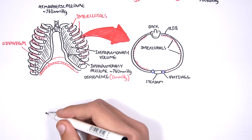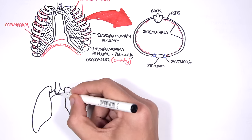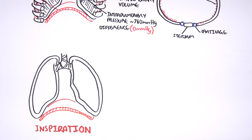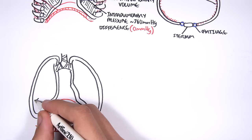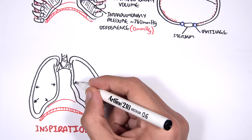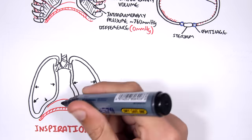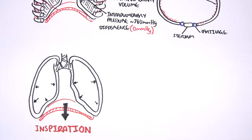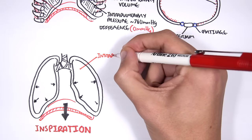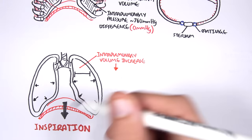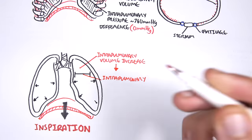Let's look at the mechanism of inspiration. Here we have the lungs, the pleura, and the diaphragm below. During inspiration, the volume within the lungs increases. This is due to the contraction of the intercostal muscles and the diaphragm — the diaphragm contracts and moves down, allowing the intrapulmonary volume to increase. Because the intrapulmonary volume increases, the intrapulmonary pressure decreases to about 759 mmHg.